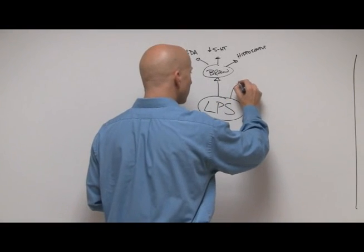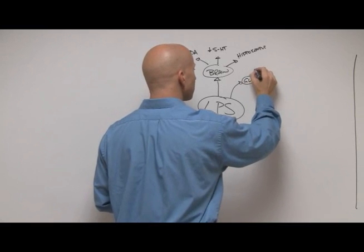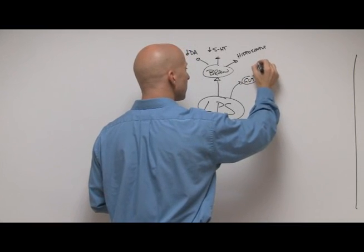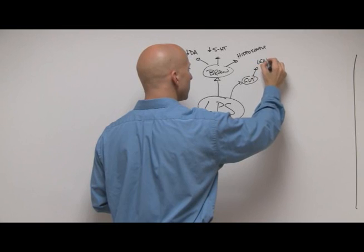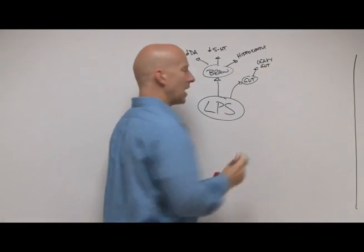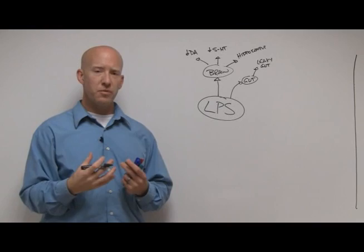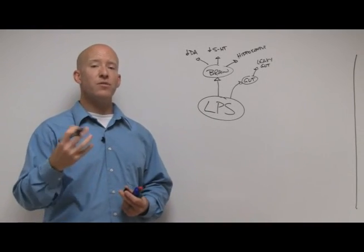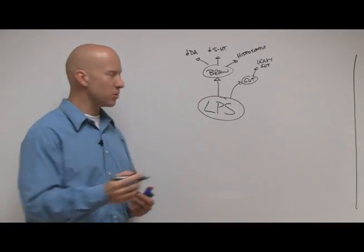But lipopolysaccharides also impact our gastrointestinal system. And in the gastrointestinal system, they're known to cause something called leaky gut or intestinal permeability. Leaky gut allows food particles that would normally be digested and absorbed fully into your system before they're fully digested, which causes an immune system response.